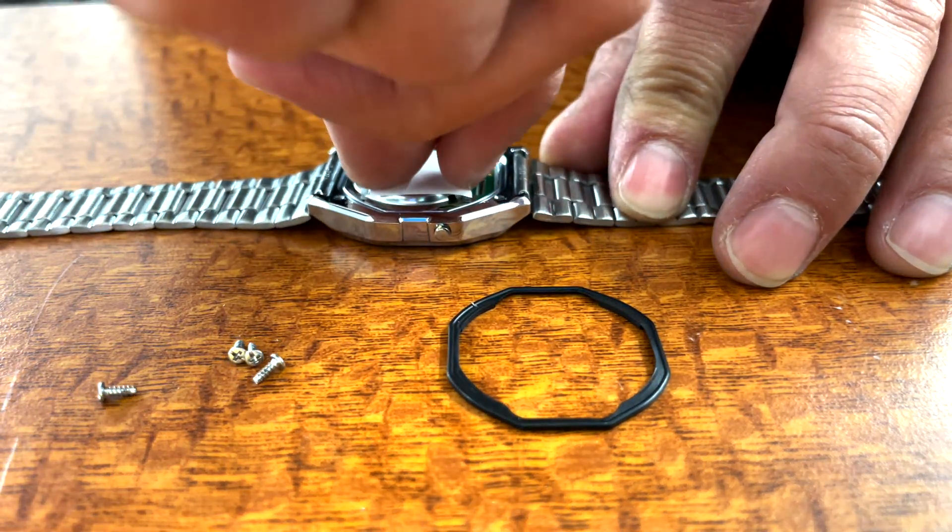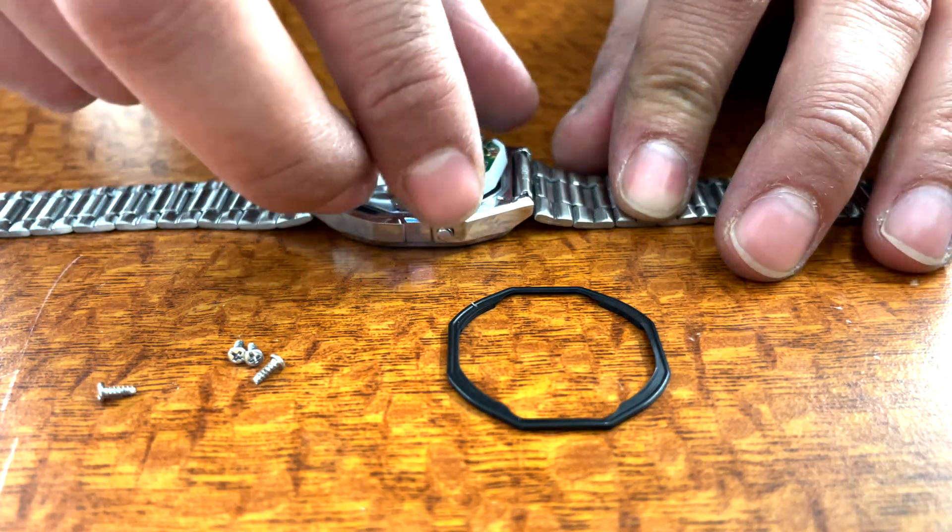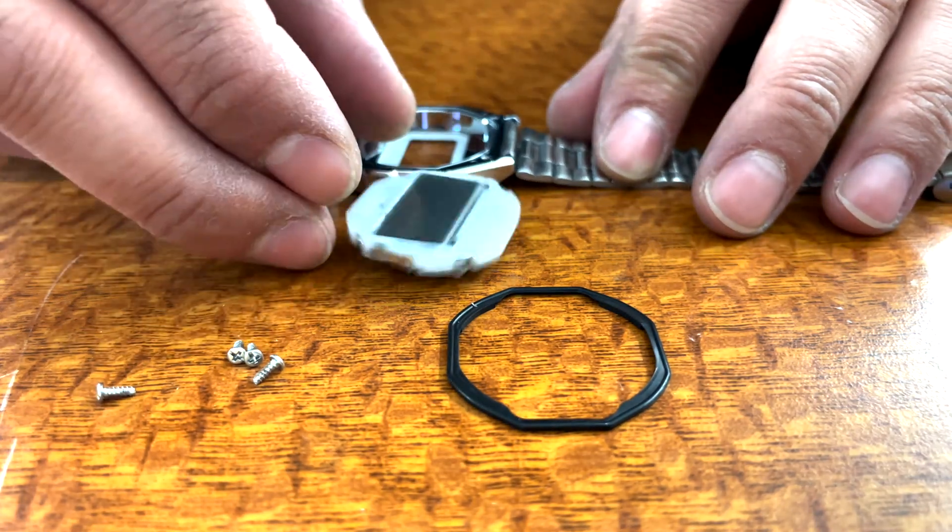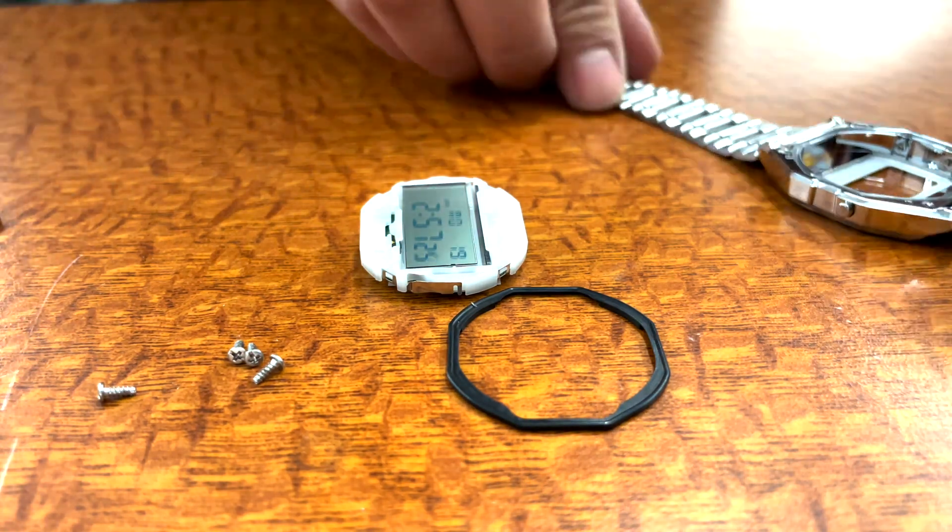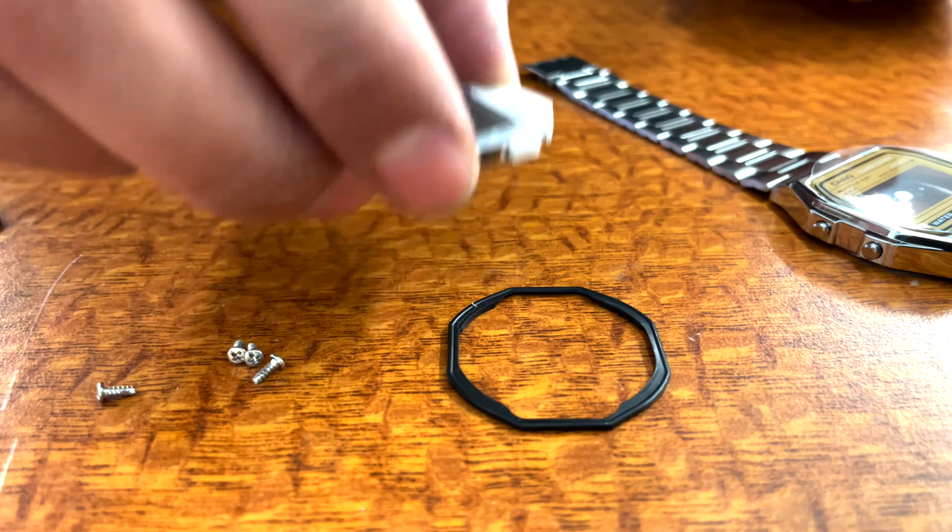Now, using a fingernail, you can gently lift the movement out of the watch case. At this point, you should set the watch case and strap aside and optionally turn it upside down to prevent dust from collecting inside.